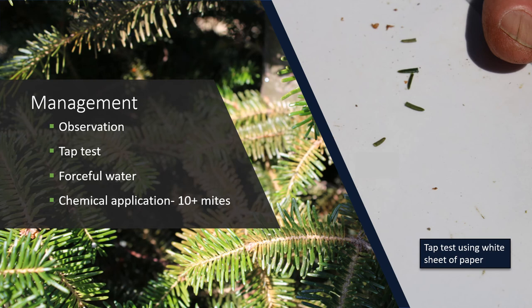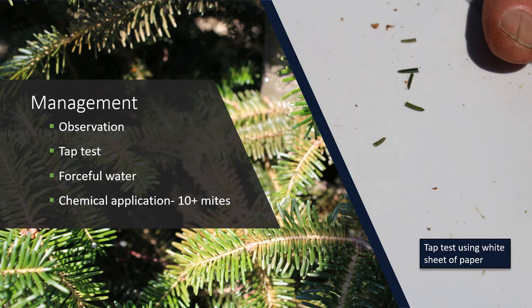Sprays containing insecticidal soap, horticultural oils, or specific miticides are effective controls. Heavy rain will wash mites off plants and is a form of natural control. Similarly, a forceful stream of water can help reduce mite numbers.